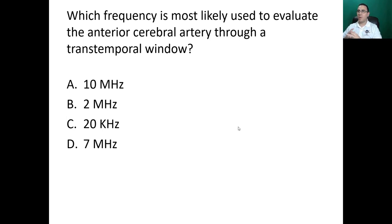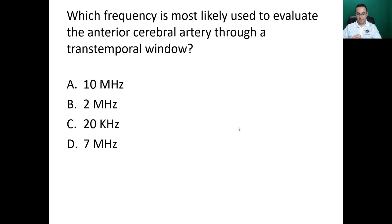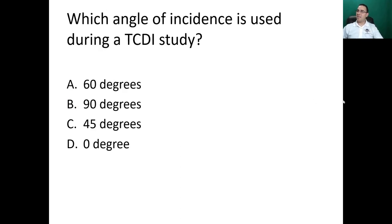Next question: which frequency is most likely used to evaluate the anterior cerebral artery through a trans-temporal window — essentially, which frequency is used for transcranial Doppler imaging (TCDI)? Options: 10 MHz, 2 MHz, 20 kHz, or 7 MHz. Remember the principle — for penetration you need low frequency to be subject to less attenuation. The answer is B: 2 MHz.